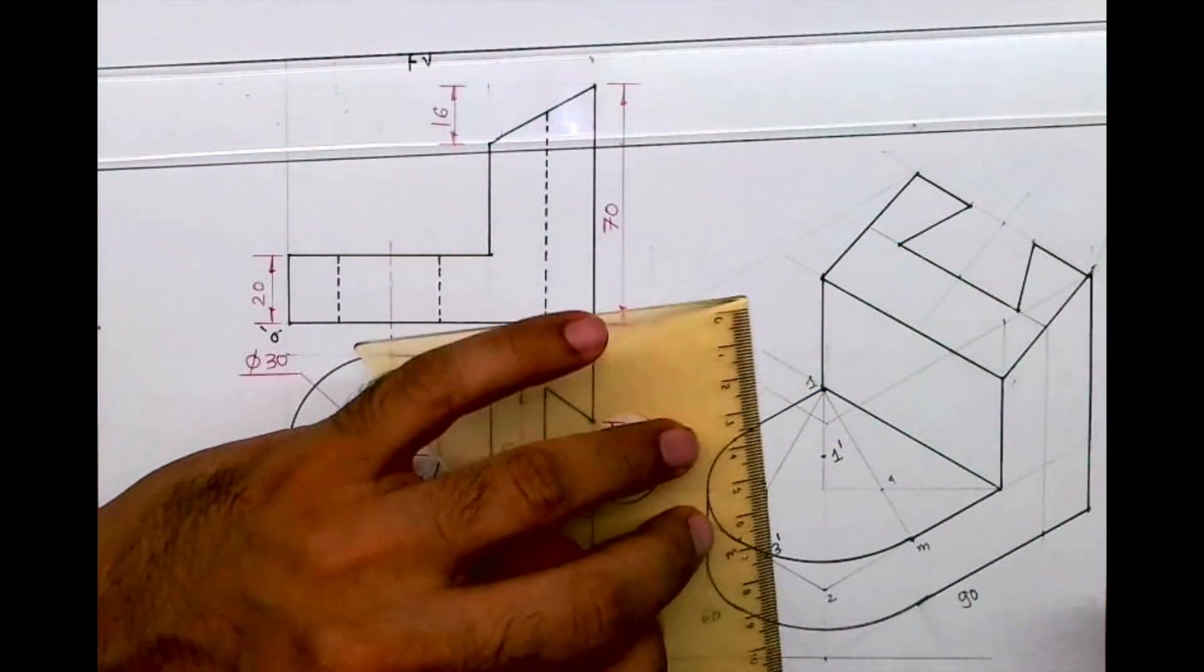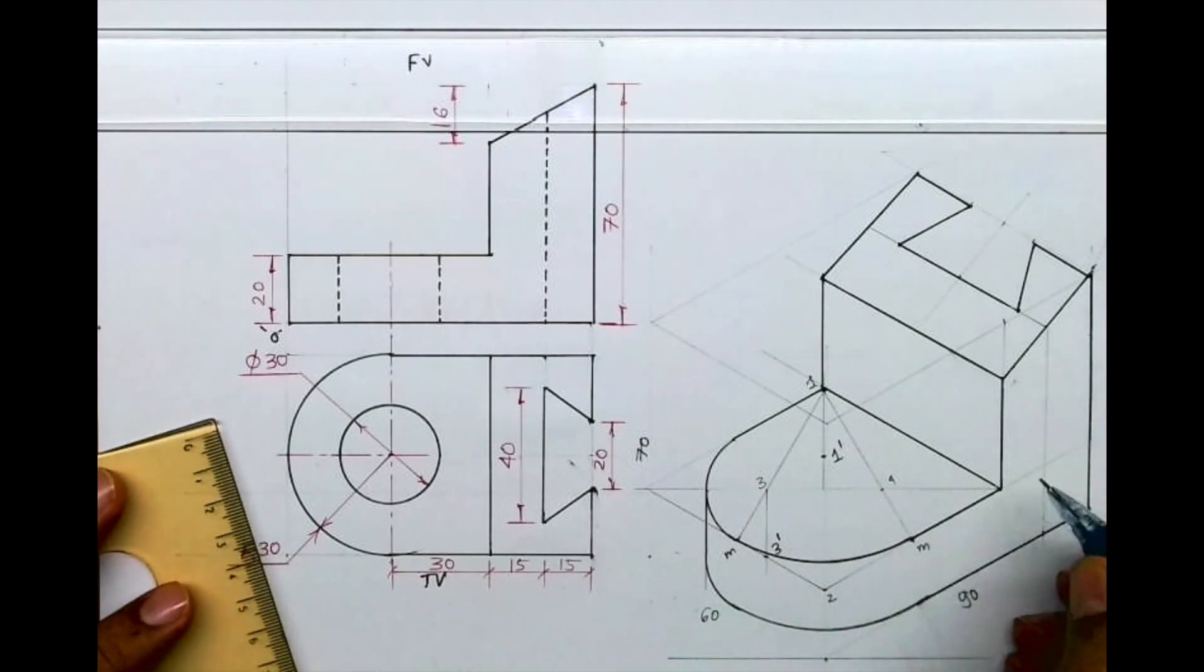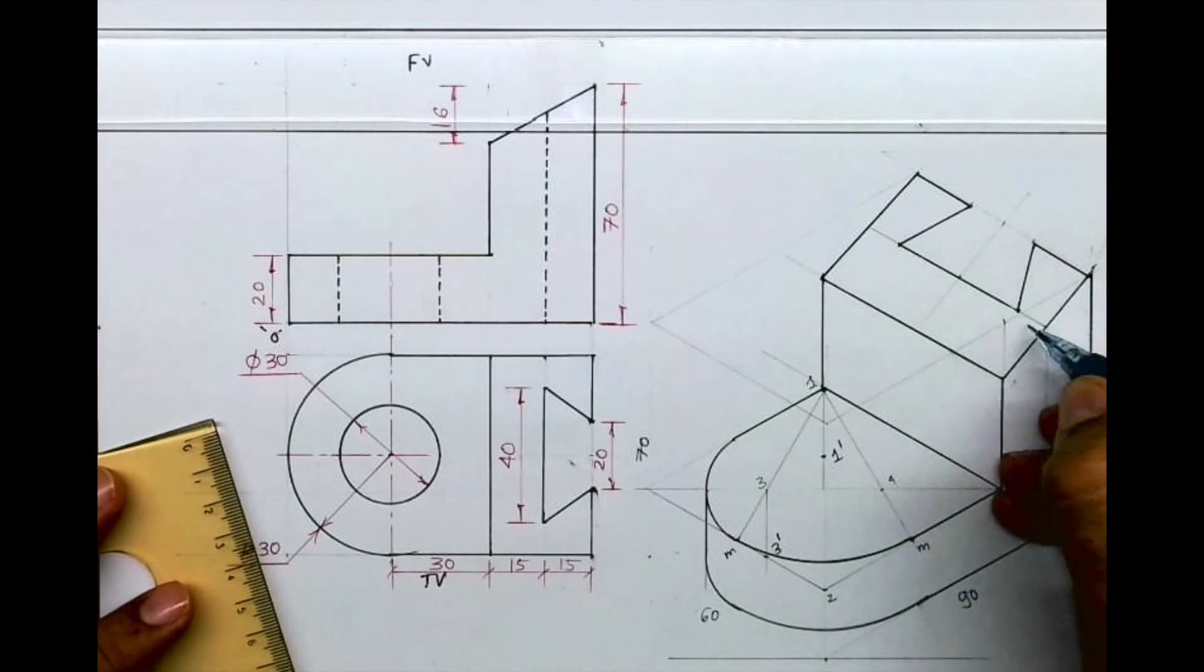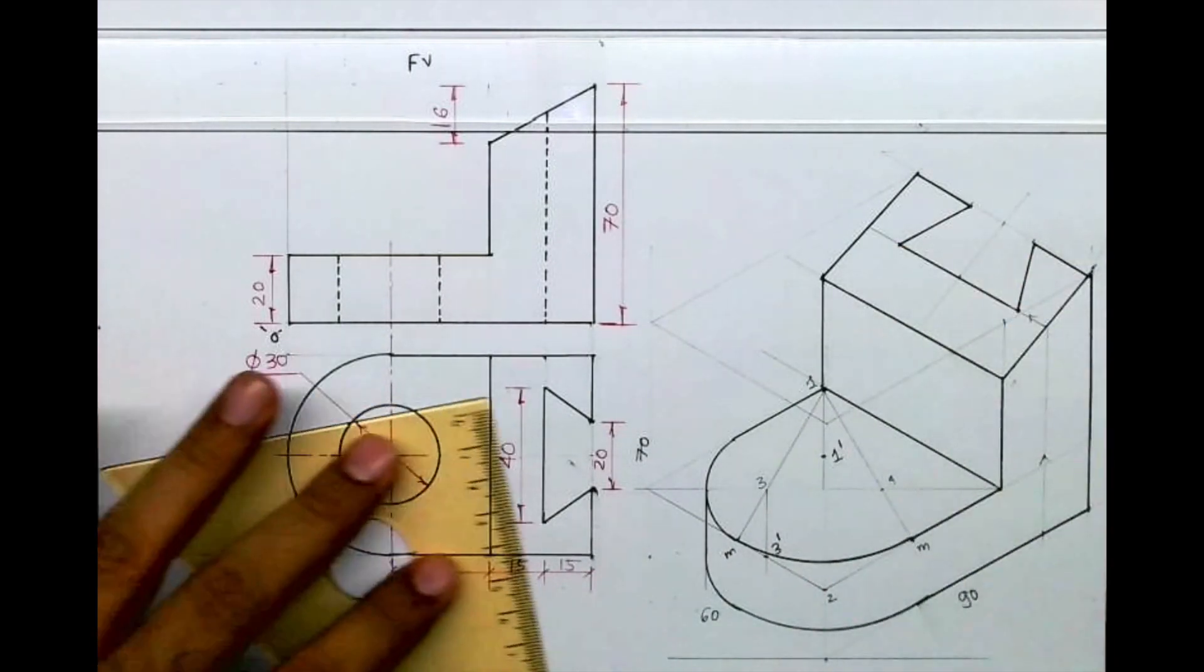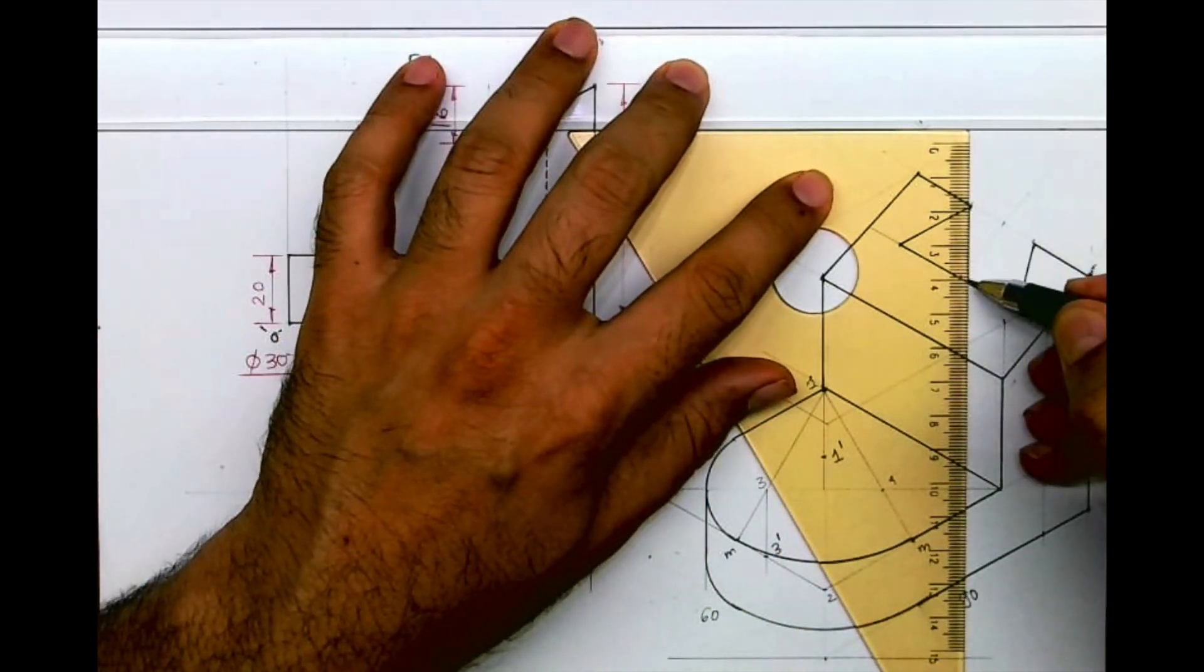So this way we are done with that slot. Once again we can see 15, we have to mark 15 then go up and then from here you draw line. And from here you draw vertical line.